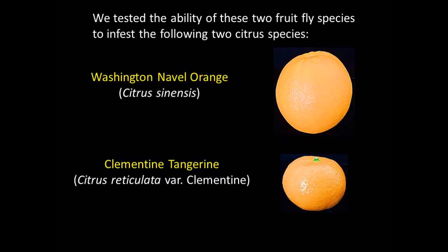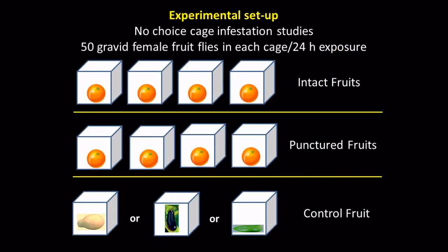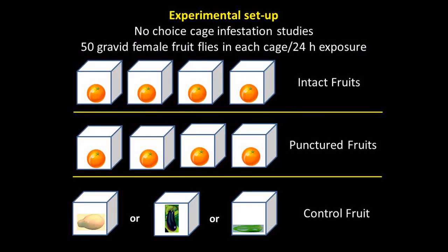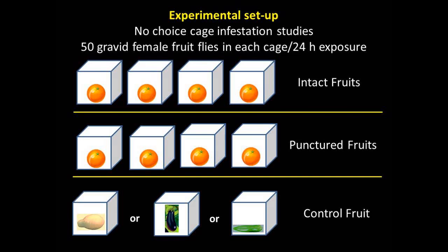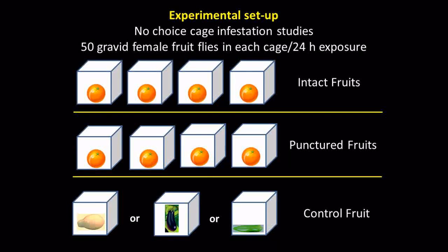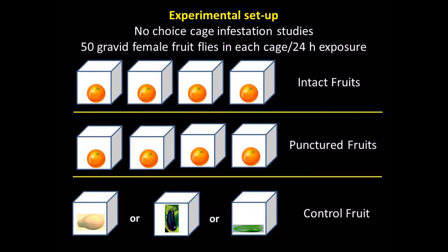We chose to test the ability of these two fruit fly species to infest two citrus species: Washington navel orange and clementine tangerine. For our tests, we used no-choice cage infestation studies with 50 gravid females per cage and 24-hour exposure to the test fruits. Trials were run separately for each fruit fly species. Each trial included four cages with intact fruits, four cages with fruits punctured 50 times, and one cage with an unpunctured control fruit known to be a good host. Control fruits used were either papaya, eggplant, or Anaheim pepper. Twelve trials were completed for clementine tangerine tests, while at least 16 trials were completed for navel orange tests.